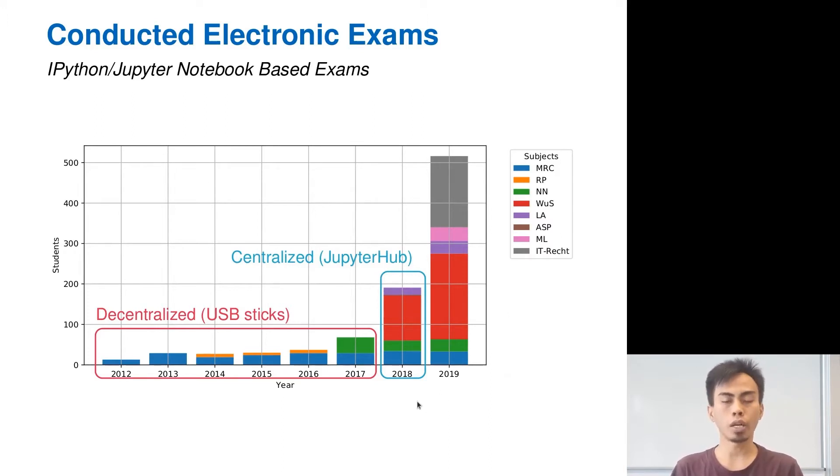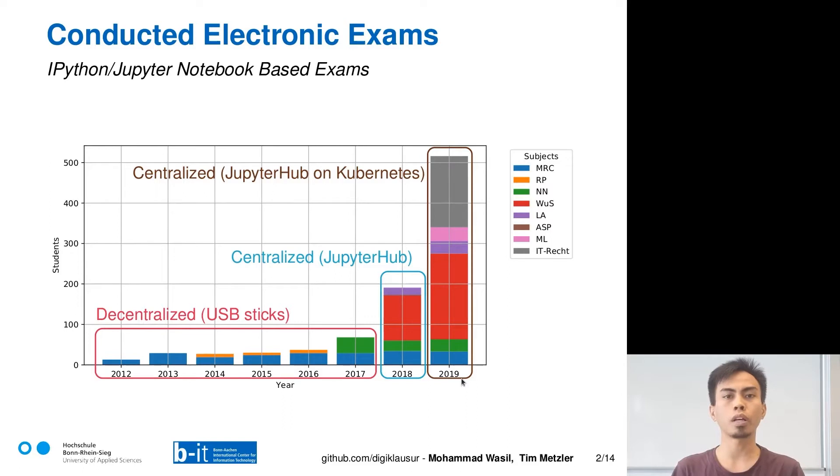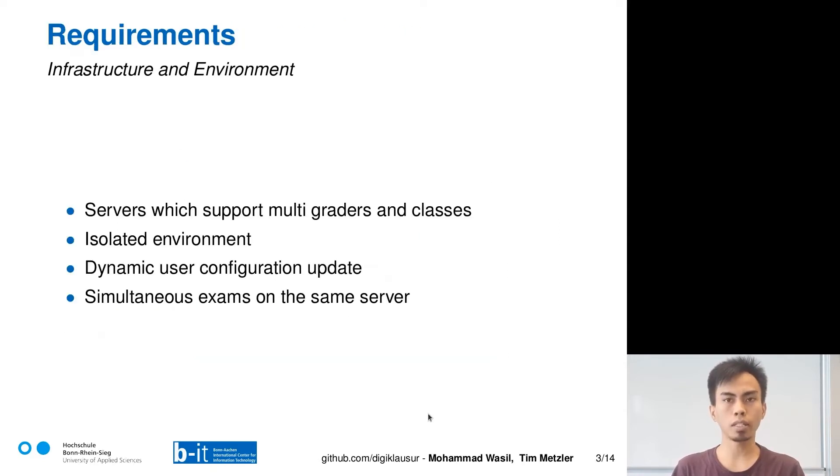However, in 2019, not only did the number of courses increase, but also the number of students rose sharply. We decided to switch to a more scalable system by installing Jupyter Hub on Kubernetes where we can always spin up more nodes if required. Let's start with the requirements of the infrastructure and environment. First, we need servers which support multi-graders and classes. We need isolation of the environment and then we need servers where the configuration can be dynamically updated. And lastly, we need servers which can handle multiple exams simultaneously.